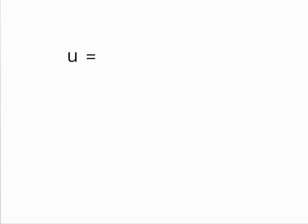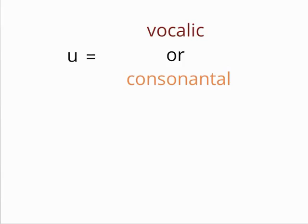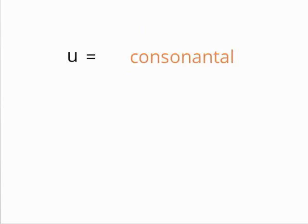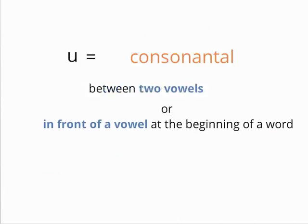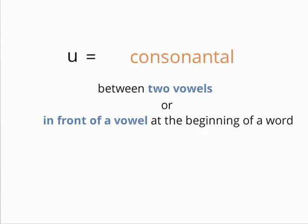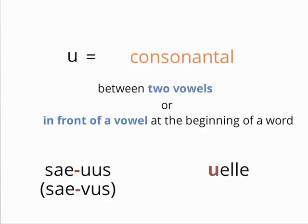The second letter is u, which can also be vocalic or consonantal. It takes on a consonantal nature under basically the same circumstances as the letter i and is pronounced wu, for example, in cywus or velle.